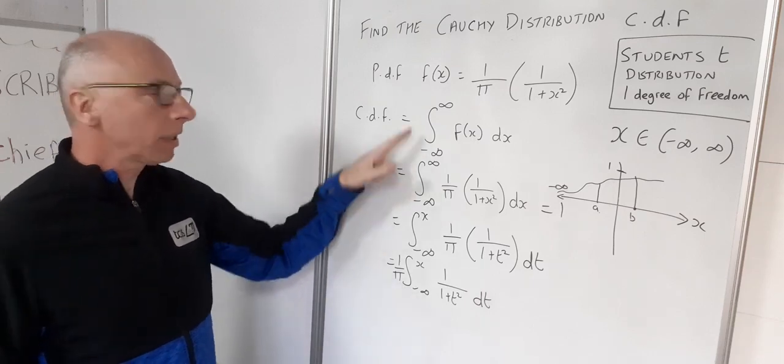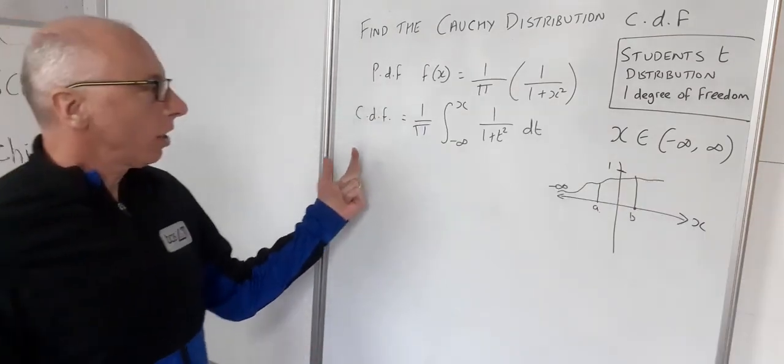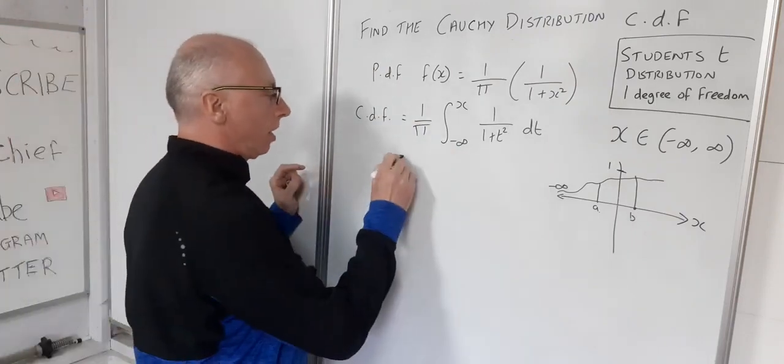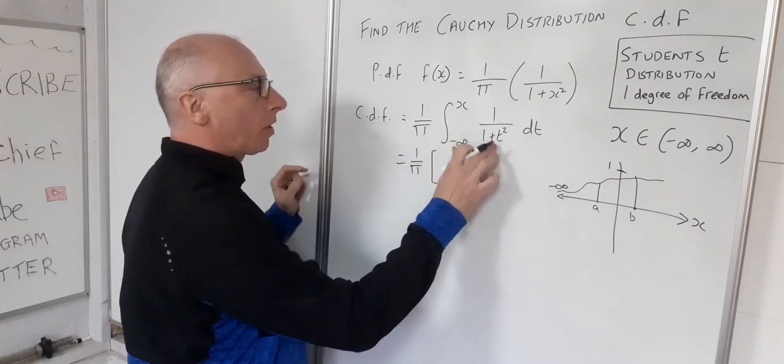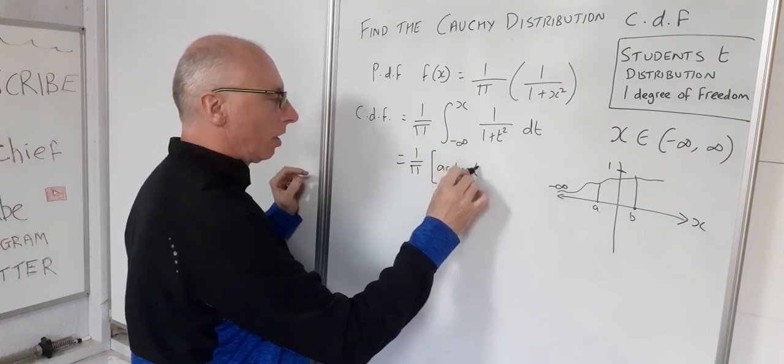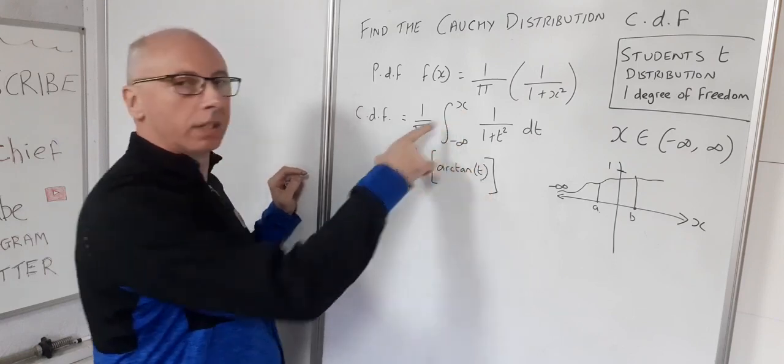Let's finish this off and put the last few steps in to find that CDF. Let's clear the board off and bring this up here. Let's go straight into the integration and we know this is going to be arc tangent of t, so we've got 1 over pi and then we've got arc tangent of t, and that's evaluated from negative infinity to x.